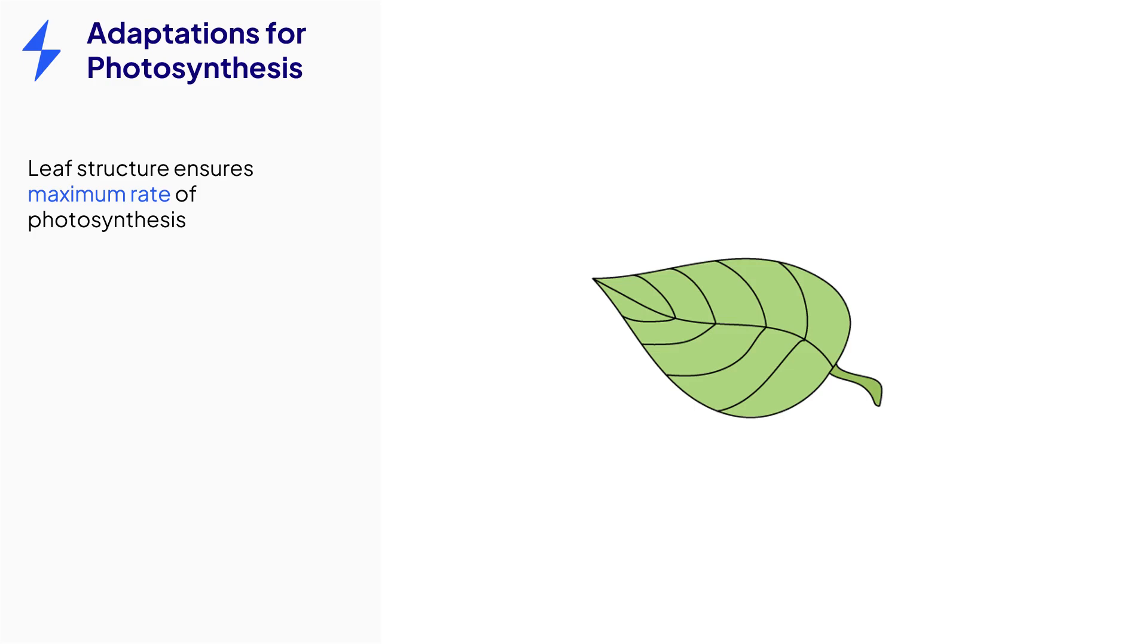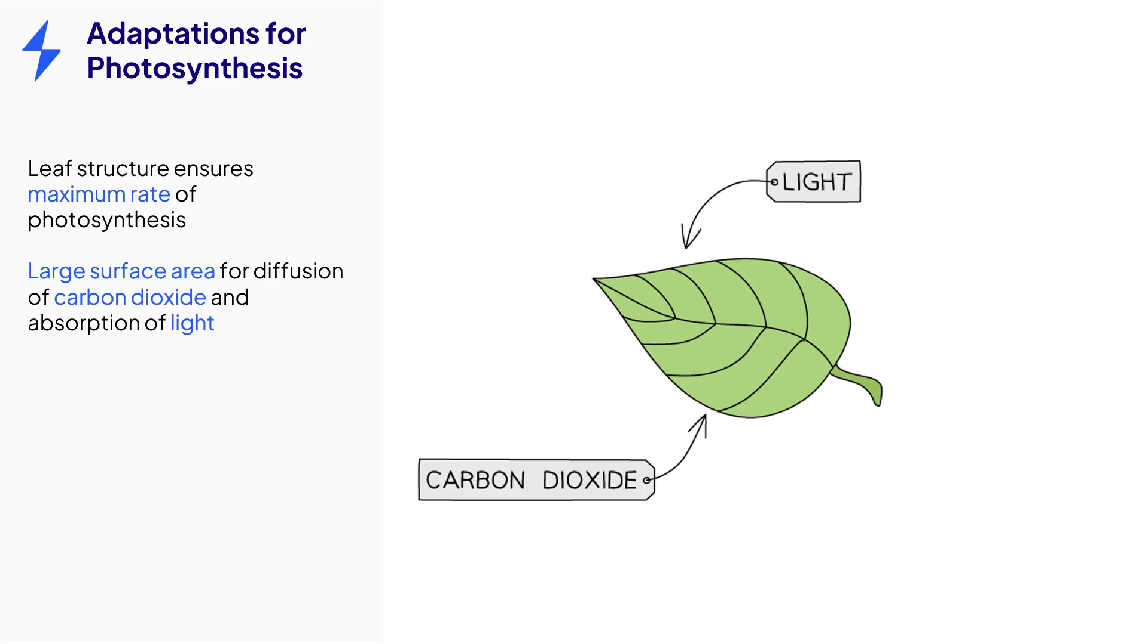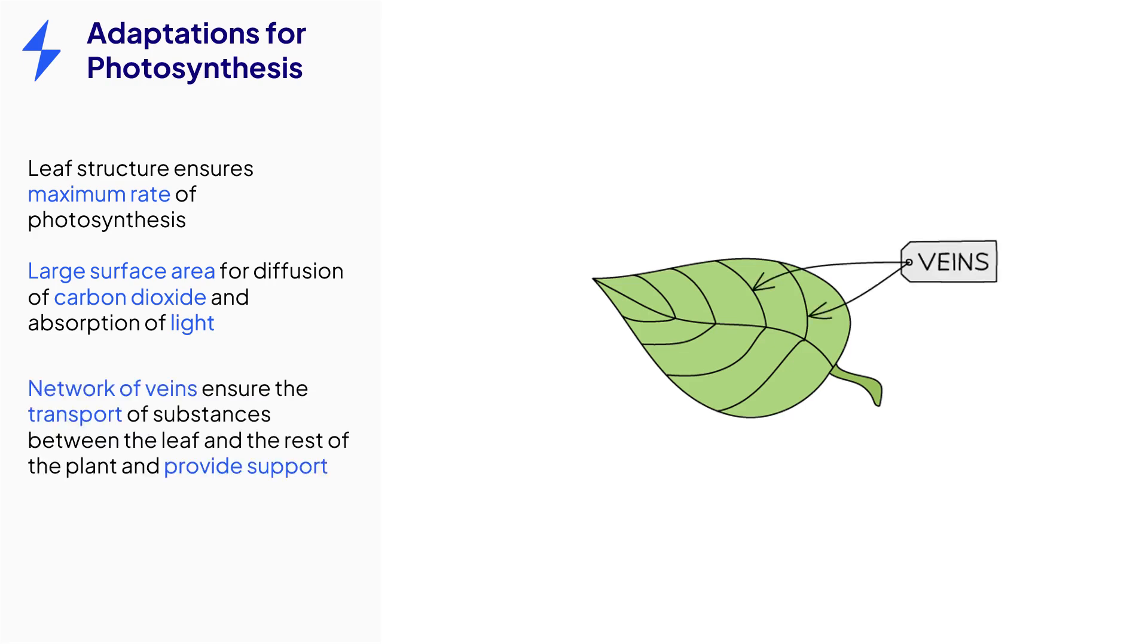The structure of leaves ensures that maximum photosynthesis is occurring in the plant. One such adaptation is that the leaf has a large surface area to facilitate the diffusion of carbon dioxide and the absorption of light. A network of veins will ensure that water is transported to the cells of the leaf for use during photosynthesis and that the carbohydrates produced during the process can be transported to the parts of the plant where it is needed.